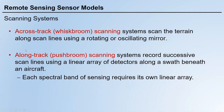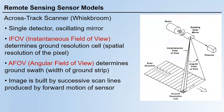The second subcategory is called along-track scanning or push broom scanning. These systems record successive scan lines using a linear array of detectors along a swath beneath an aircraft or satellite. For push broom scanning, each spectral band of sensing requires its own linear array. On the right side, we have an illustration of the across-track or whisk broom scanning system.